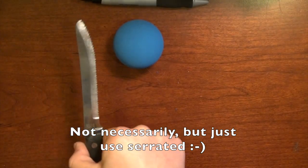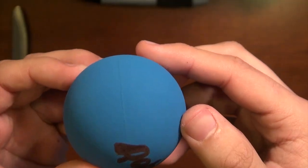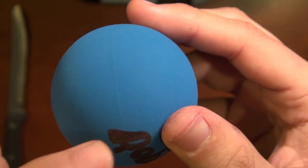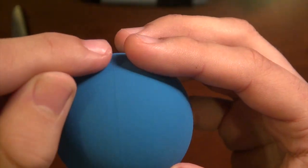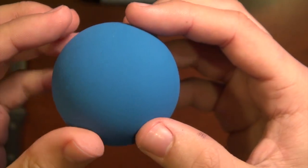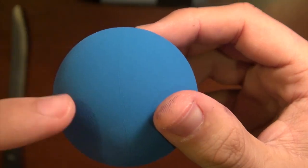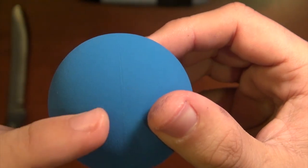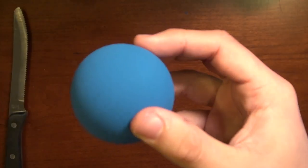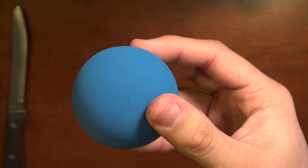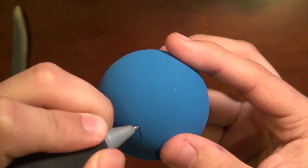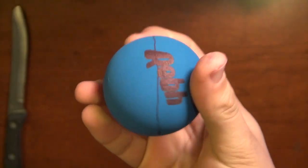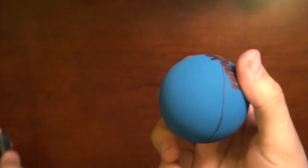So you want to use a serrated knife, just like this. If you take a close look at the ball, you'll notice that it actually has a line that divides the ball all the way in half. And we're going to be cutting along this line. Now, I know you guys can see it, but I'm going to actually draw on the line with a pen, so that it's easier for me to see, and for you to see, as well.